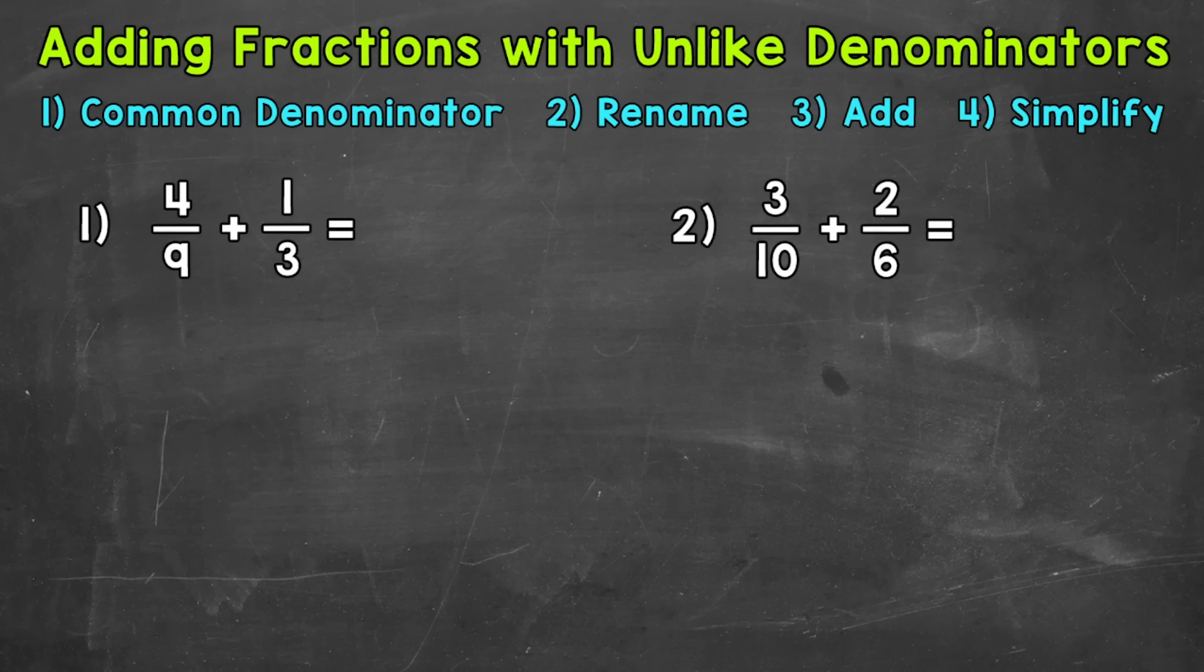Now when we add fractions, we need a common denominator. In other words, the bottom numbers need to be the same in order to add. For number 1, we have a 9 and a 3, so obviously we don't have a common denominator to start with, so we can't add quite yet. So the first thing that we need to do is find a common denominator, and we can do that by finding the least common multiple between our denominators.